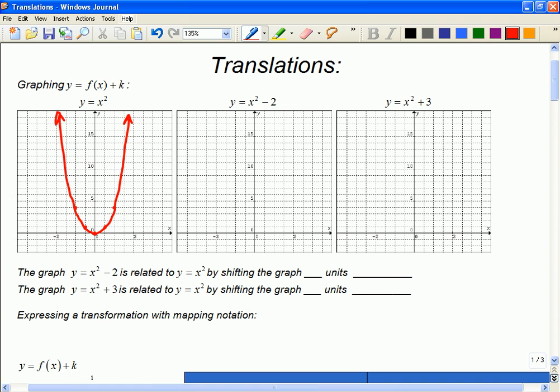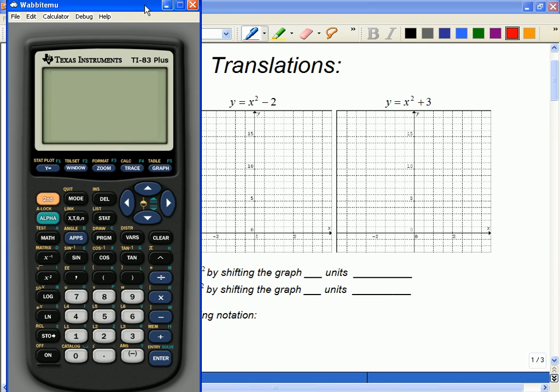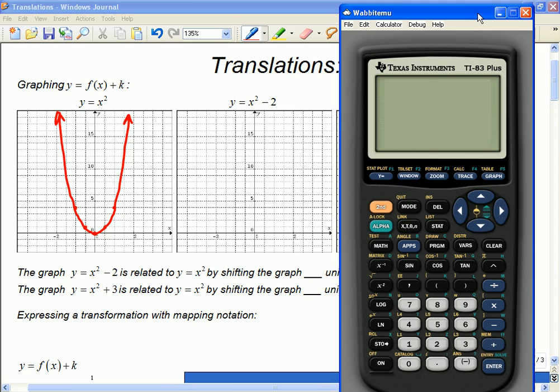So what I'm going to do is I'm going to pull up my graphing calculator and compare it to the same parabola, but this time there's a minus 2 here. So if you're not familiar with your TI-83, this is where you go to put in an equation, and it'll be x squared minus 2.